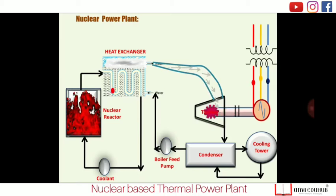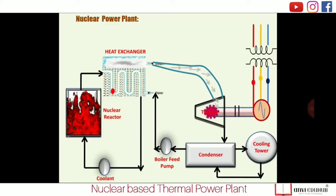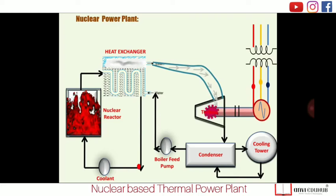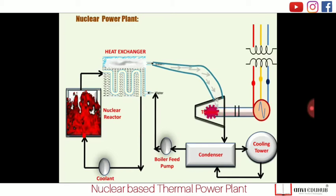After doing useful work in the steam turbine, the steam goes to the condenser where it is converted back into water and sent back to the heat exchanger. These are the basic components of a nuclear power plant. An important concern is that during the nuclear fusion process, many radioactive materials are produced, and we must protect lives from these radioactive elements.